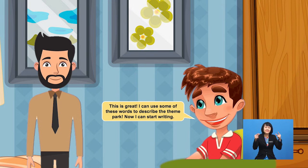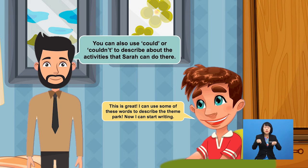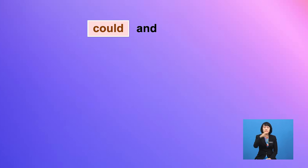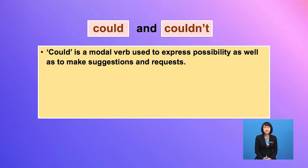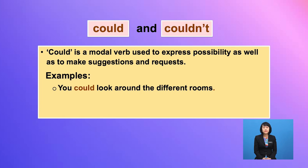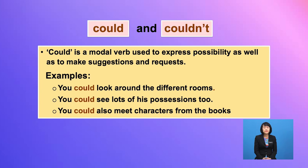This is great. I can use some of these words to describe the theme park. Now I can start writing. Wait, there's one more thing I want to tell you, Yusuf. You can also use 'could' or 'couldn't' to describe the activities that Sarah can do there. 'Could' is a modal word used to express possibility as well as to make suggestions and requests. Look at the examples: 'You could look around the different rooms. You could see lots of his possessions too. You could also meet characters from the books.'